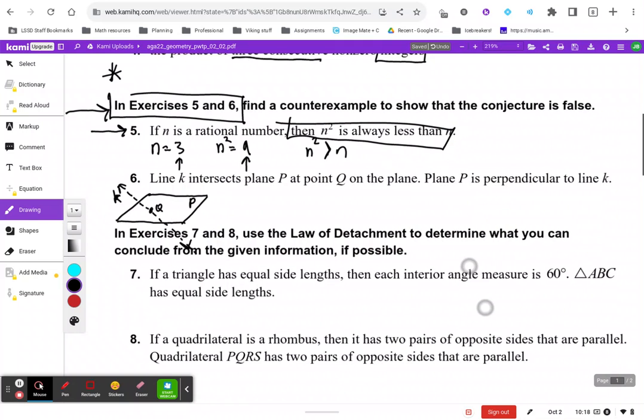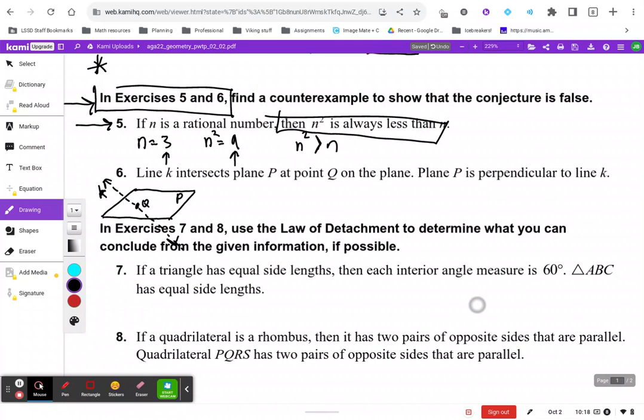Number 6 involves our basic geometric terms. So we have a line and a plane. The conjecture here is that in this circumstance, plane P is perpendicular to line K. That's kind of a silly conclusion because it's quite easy for me to consider a situation where this line K intersects the plane at some angle that is not 90 degrees.